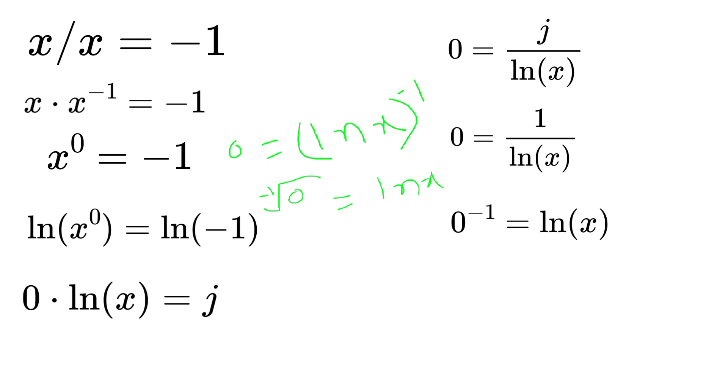Now the left side becomes zero to the power of negative one equals log x, as the negative one root is the reciprocal of a number. So the reciprocal of negative one is negative one. But the reciprocal of zero is k, and k is the singularity unit and is defined as one over zero. So the equation becomes k equals log x.